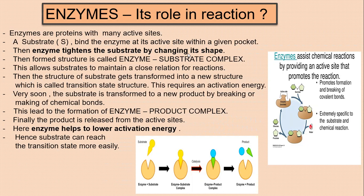Enzymes have a folded structure at the protein level — a globular level structure — with pockets on their surface called the active site. There is a schematic representation: in an enzyme, it combines with a substrate, and that enzyme can accommodate only a specific substrate. If the substrate matches and fits, the enzyme and substrate convert into an enzyme-substrate complex. The enzyme changes shape to tighten around the substrate.